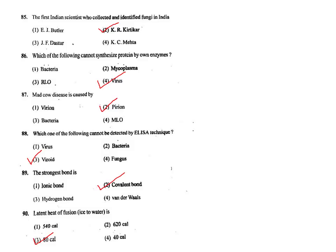Q89. The strongest bond is covalent bond, which is the strongest among ionic, hydrogen, and van der Waals bonds. The correct answer is option 1.